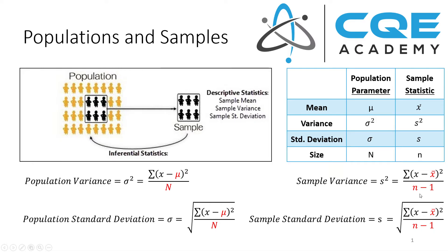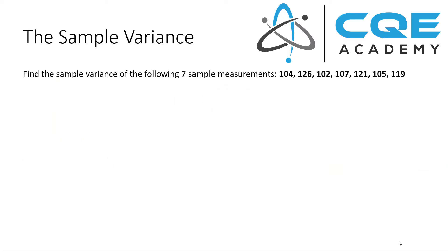Now let me walk you through an example so you can see how this works in real life. Here's an example: find the sample variance of the following seven sample measurements.